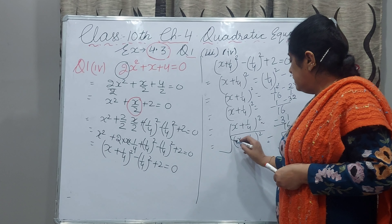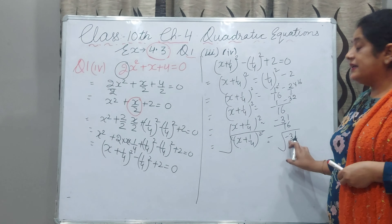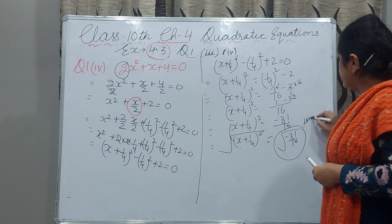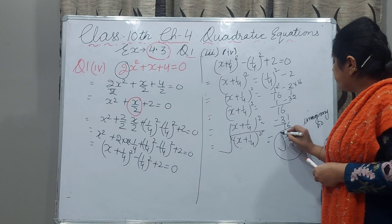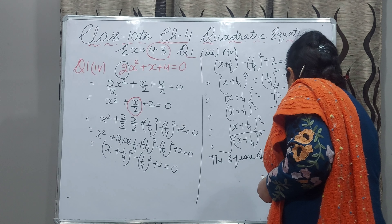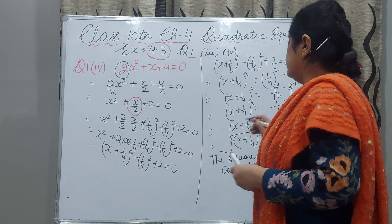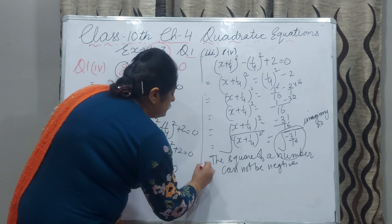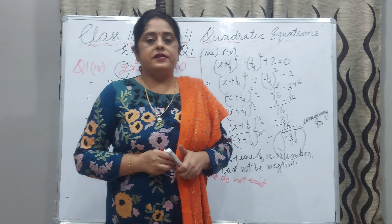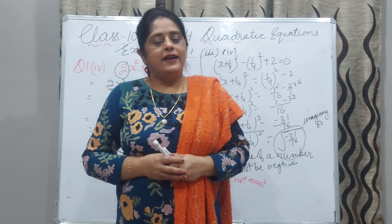Now look — there is a negative number inside the square root. The square root of a negative number is not a real number. It is an imaginary number. The square of any real number cannot be negative. Therefore, the roots do not exist — they are not real numbers. Hope you understood. Don't forget to like and subscribe to my channel, and thanks for watching.